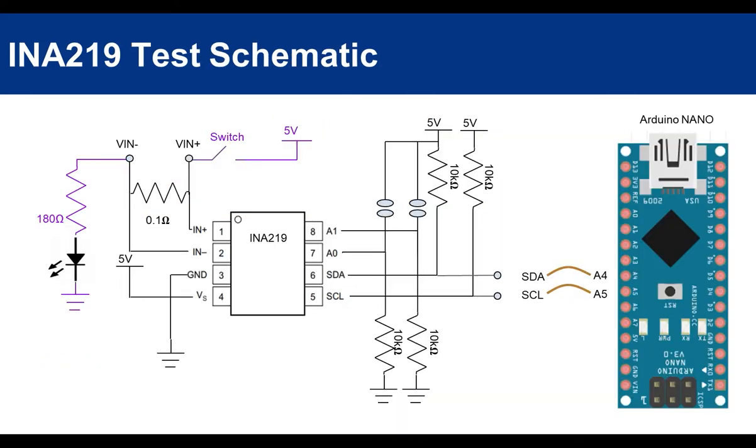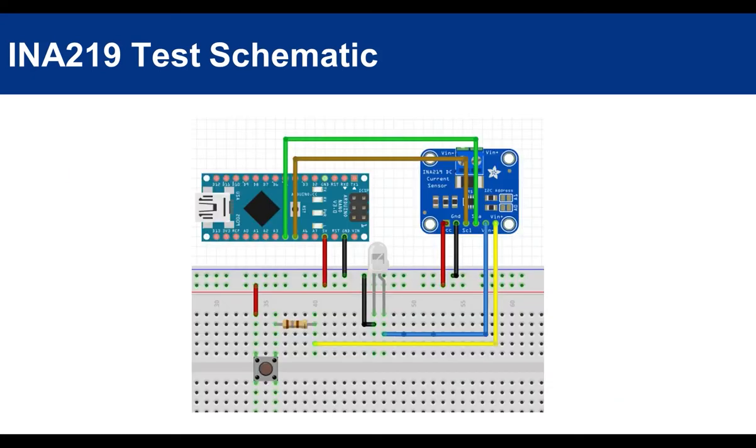Now let's take a look at the schematic I used for testing the INA219 module. I used an Arduino Nano for the controller, and for the load, I used one LED in series with a resistor for current limiting, and added a push switch for turning on and off the LED to show you the change of the current and voltage value. This is the connection example based on previous schematic.